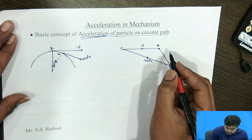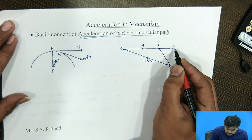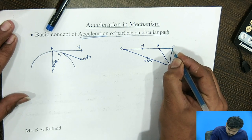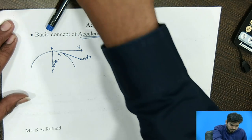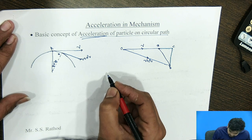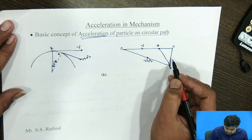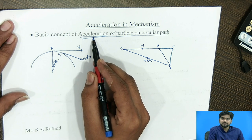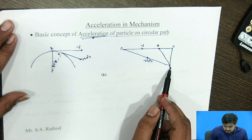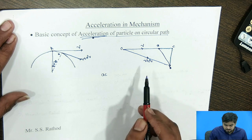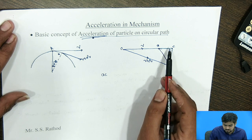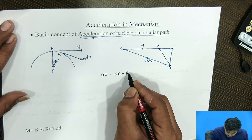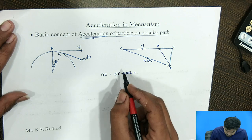This change in velocity has two components: AC and CB. We can draw these with dotted lines — AC is one component and BC is another component. To find the acceleration, we need to find AC and AB since acceleration is the rate of change of velocity with respect to time. AB gives the change in velocity, and it has two mutually perpendicular components, AC and CB. AC equals OC minus OA, where OC makes an angle delta theta.